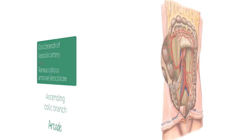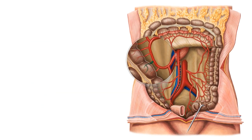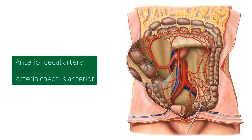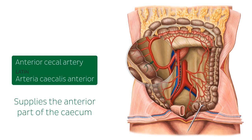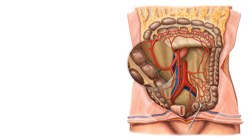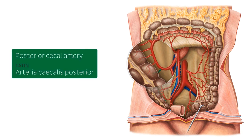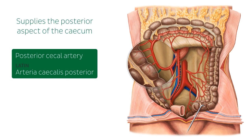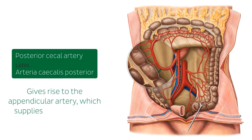If we zoom in to take a closer look at the arcade in the bottom left of this image, we can see a small artery branching from it. This artery is known as the anterior cecal artery and supplies the anterior part of the cecum. Inferior to the anterior cecal artery is the posterior cecal artery, which also branches off the same arcade. The posterior cecal artery supplies the posterior aspect of the cecum and also often gives rise to the appendicular artery, which supplies the vermiform appendix.